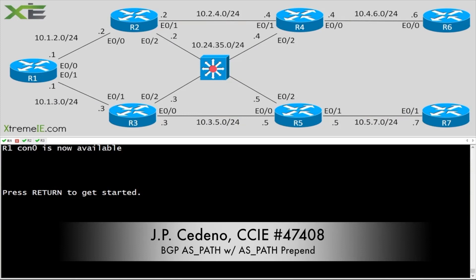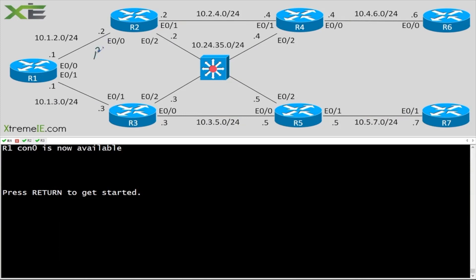Now it's time for AS Path. Remember that BGP is a path vector protocol, so what we're concerned about is this attribute called AS_path.